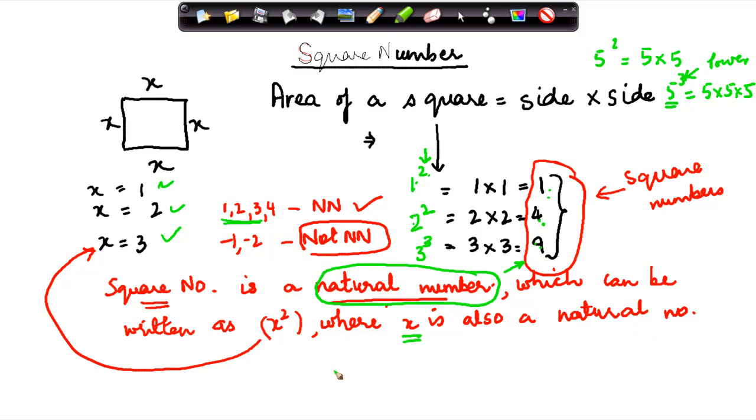Now let me tell you one interesting thing. If I were to multiply minus 2 into minus 2, this will give me 2 into 2, which is 4, and this minus into minus gives us a positive sign.